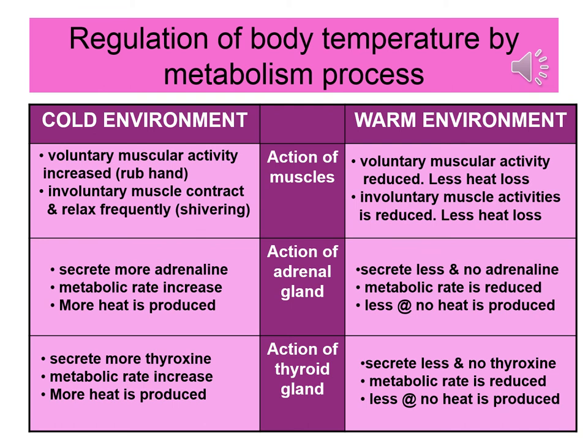This is how the regulation of body temperature works by metabolism — the action of muscle, adrenal gland, and thyroid gland. During a cold environment, voluntary muscular activity increases, such as rubbing hands. Involuntary muscle contracts and relaxes rapidly, so we shiver. The adrenal gland secretes more adrenaline to increase metabolic rate, and more heat is produced. The thyroid gland secretes more thyroxin to increase metabolism and produce more heat.